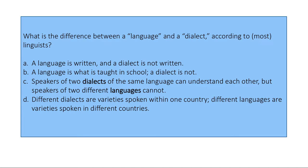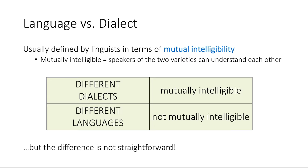While all of these are definitions people use, the one usually used by linguists is option C — mutual intelligibility. Mutual intelligibility means that speakers of two varieties can understand each other. If two people speak slightly different varieties but can understand each other, we say those are dialects. But if they can't understand each other, those are languages. That said, the difference isn't always that straightforward, and the way people use these terms often doesn't reflect that technical definition.